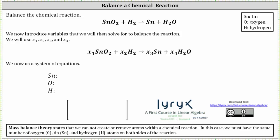We want to balance the given chemical reaction. The mass balance theory states that we cannot create or remove atoms within a chemical reaction, which means in this case we must have the same number of oxygen, tin, and hydrogen atoms on both sides of the reaction. Notice right now we don't. For example, we have two atoms of oxygen on the left and only one on the right.